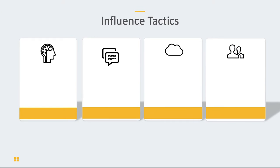We're going to break this up — there are 10 tactics and we're going to focus on these first four. The first one is called rational persuasion. This occurs when we try to influence another person through logical arguments and using hard facts.